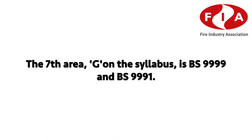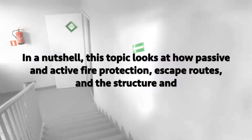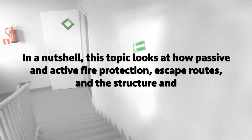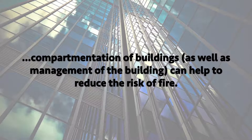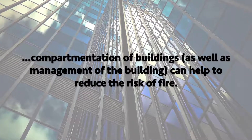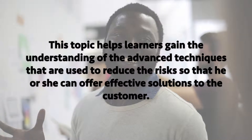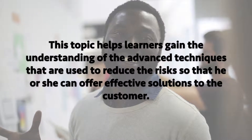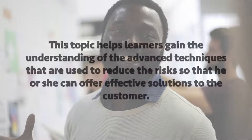The seventh area, G on the syllabus, is BS 9999 and BS 9991. In a nutshell, this topic looks at how passive and active fire protection, escape routes, the structure and compartmentation of buildings, as well as the management of the building and testing can help to reduce the risk of fire. This topic helps learners gain an understanding of the advanced techniques used to reduce risks so that they can offer effective solutions to the customer.